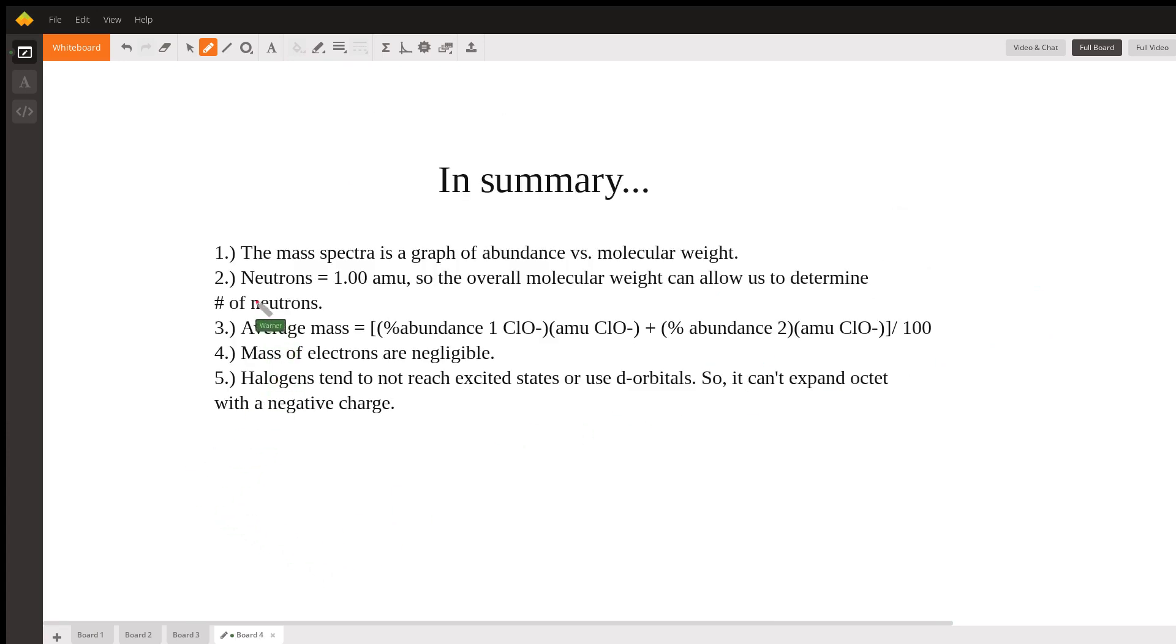In summary, a mass spectra graph is a graph of abundance versus molecular weight. Neutrons are around 1 AMU, so molecular weight can allow us to determine the number of neutrons. We can use this equation to determine average mass. We found out that mass of electrons are negligible, so it wouldn't affect the spectra as much. Halogens don't reach excited states because they don't use D orbitals, so they can't expand to an octet with a negative charge.